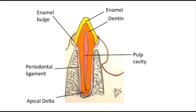Under the enamel is the dentin, which is also very hard, and it continues to thicken during the life of the animal. Inside is the pink pulp cavity, where the blood vessels and nerves are. At the bottom of the root of the tooth, which is under the gum line, is the apical delta, where the vessels and nerves enter into the pulp.